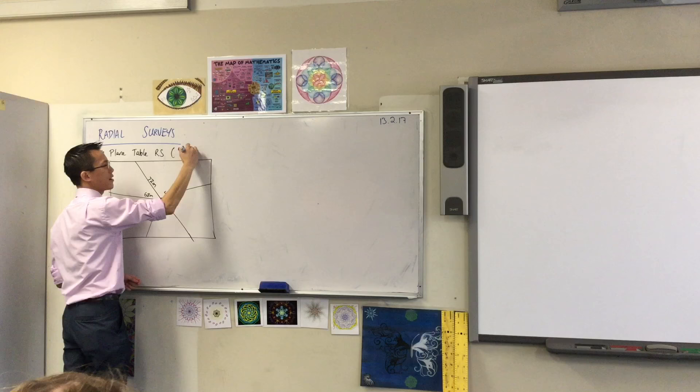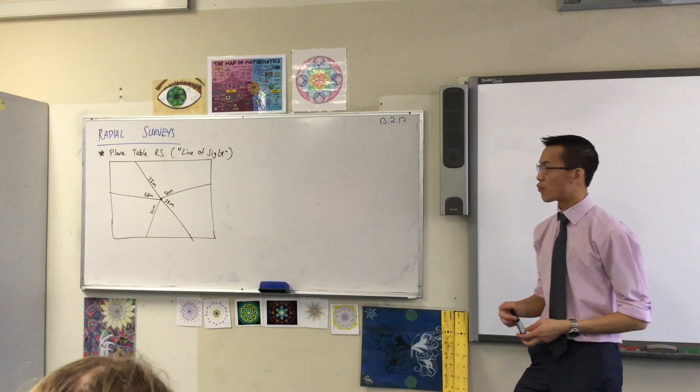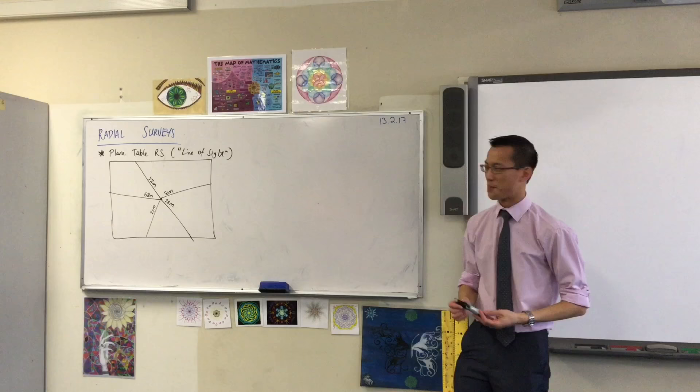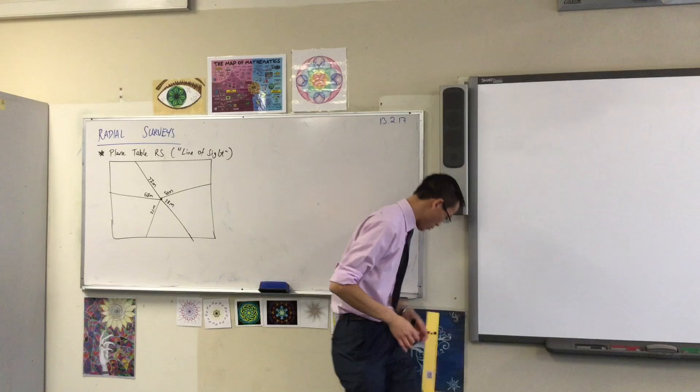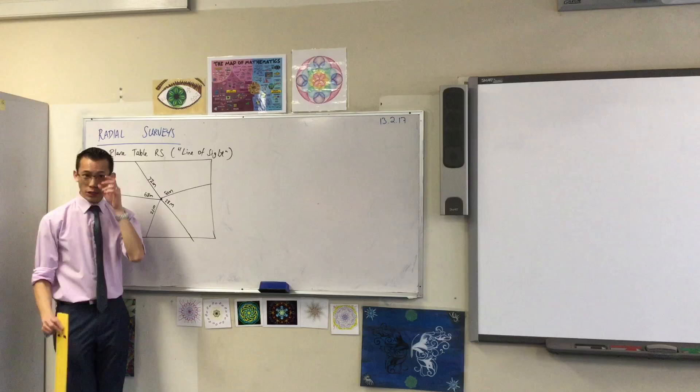This is what I call the line of sight survey because I think that's the easiest way to distinguish it. But its formal name, and this is what I'd love you to make as a subheading, is a plain table radial survey. Plain as in a flat surface, as opposed to this is a plain cake without much fancy stuff. In fact, this will be useful.